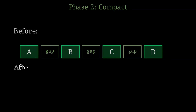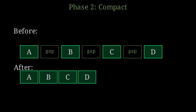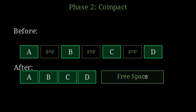Now watch what happens during compaction. The collector moves all the live objects together. Objects A, B, C, and D are now side by side — no gaps between them. They form one contiguous block at the beginning of the heap. And look at what's left: one large contiguous block of free space. Instead of many small gaps scattered throughout memory, we now have a single large chunk of available memory. This solves the fragmentation problem completely.